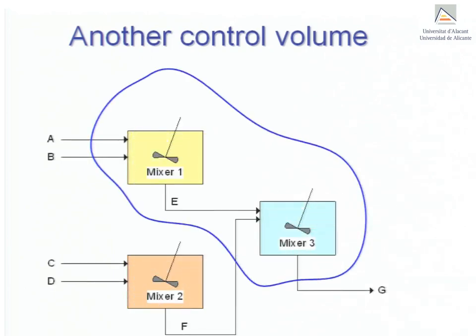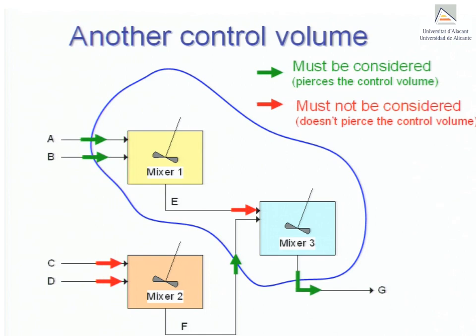Let's consider the other possible control volumes. This control volume takes into account all the streams crossing its boundary, i.e. A, B, F and G. It does not take into account streams E, C or D. Nor should we care about what happens in Mixer 2 because it does not fall within the area defined by the control volume boundary. On the other hand, we cannot know what happens individually in Mixers 1 and 3. The blue line therefore defines an entirely new process unit.